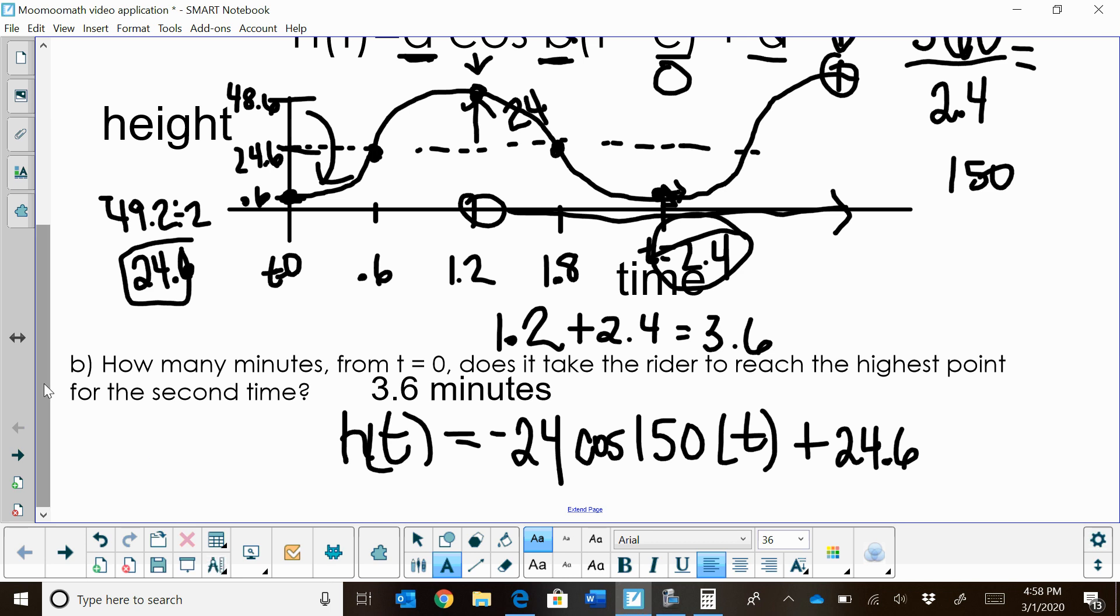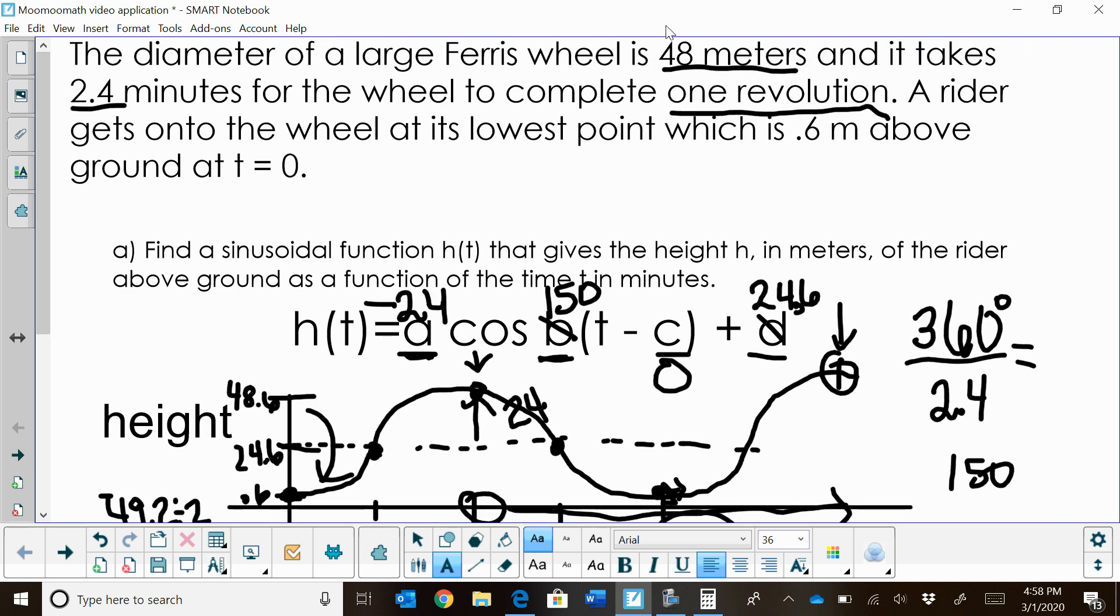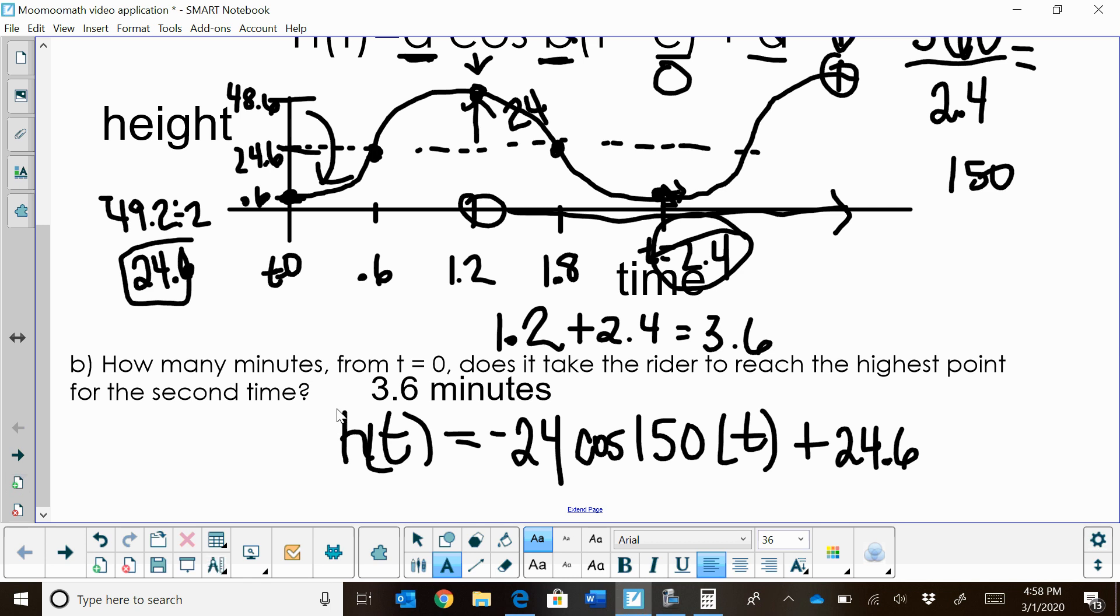So hopefully that was helpful. You could see how I set it up. What I typically do is take the information, make a graph. From the graph, we then write the equation, plugging in our amplitude, our B value, which comes from 360 divided by the period of the function. That gives us our B value. C is our phase shift, left to right, and this one started on the axis, so we started at zero. And D is our midline, which is our upshift of our cosine curve. Then we can use that equation to interpret. I hope this video was helpful on learning applications of sinusoidals.